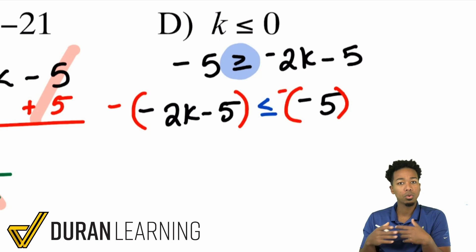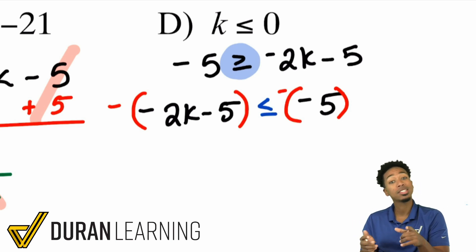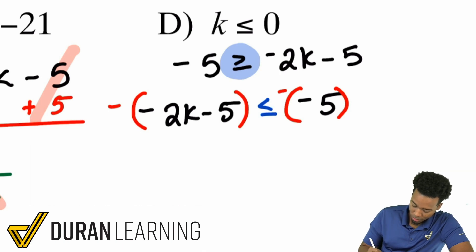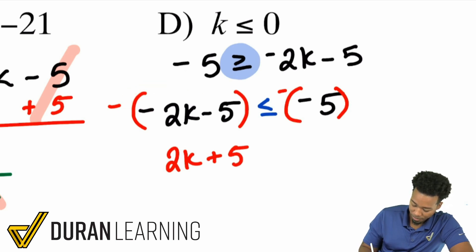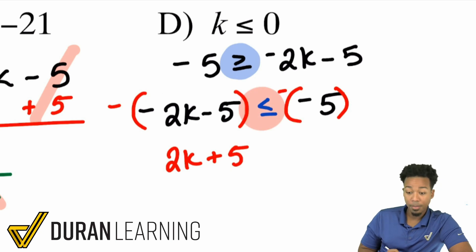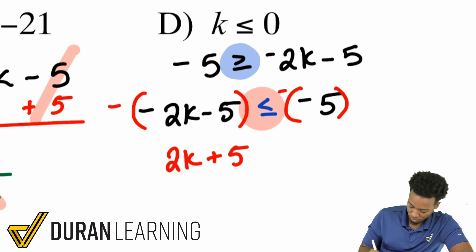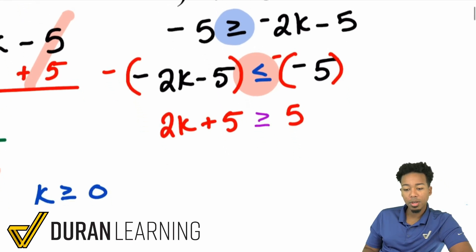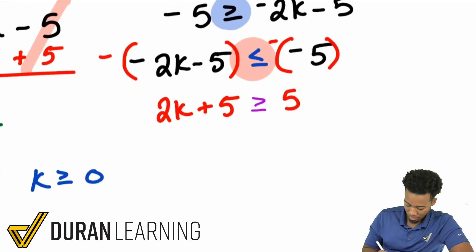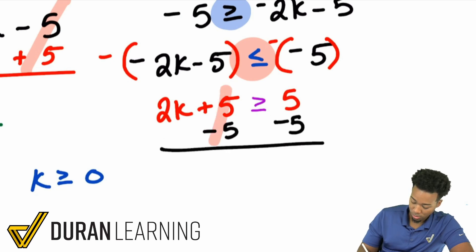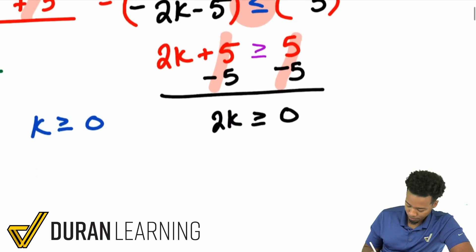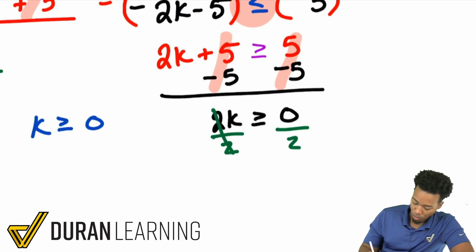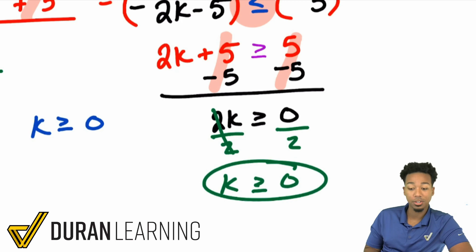Multiplying by a negative on both sides: a negative times negative 2k is positive 2k, and a negative times negative 5 is plus 5. Since we multiplied by a negative, that less than or equal to becomes greater than or equal to. And that negative times negative 5 on the right becomes positive 5. Now it's easier to manage — I subtract 5 from both sides, which cancels out, giving me 2k is greater than or equal to 0. Then I divide both sides by 2, and I'm done: k is greater than or equal to 0. The same correct answer.